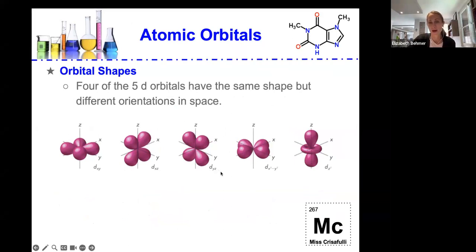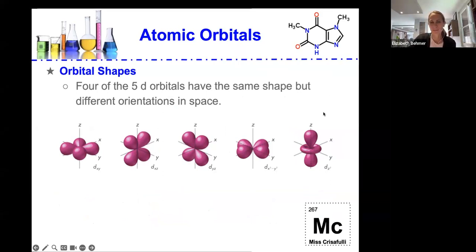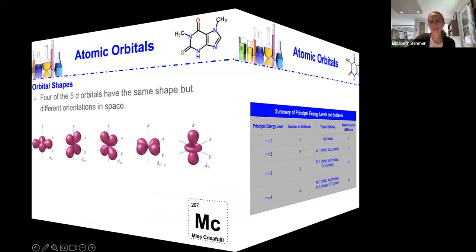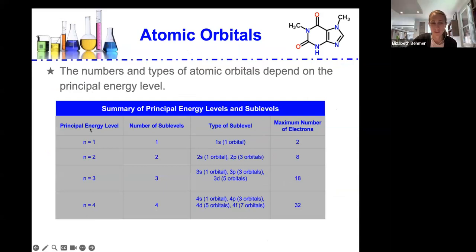So four of the five d orbitals have the same shape, but they are in just different orientations in space. The dxy, xz, yz, and x squared minus y squared. The dz squared is a totally different shape as you can see here. So this kind of describes the numbers and types of the atomic orbitals depend on the principal energy level.